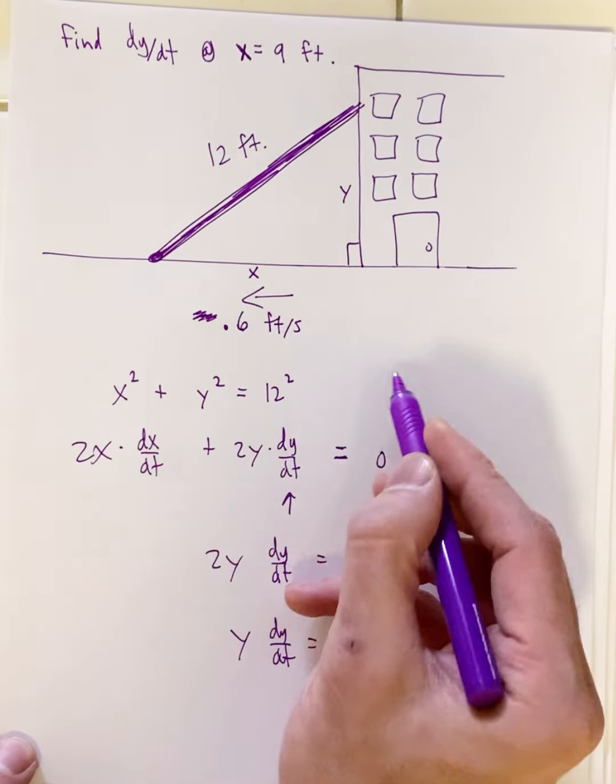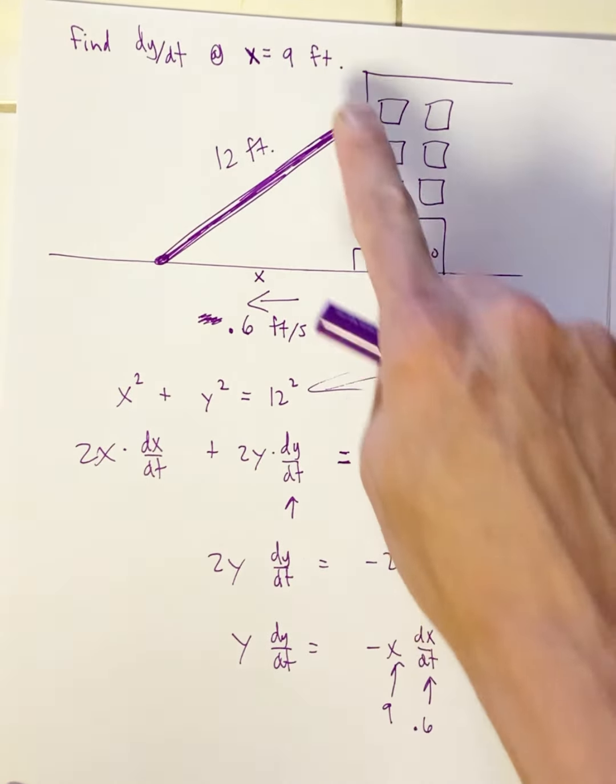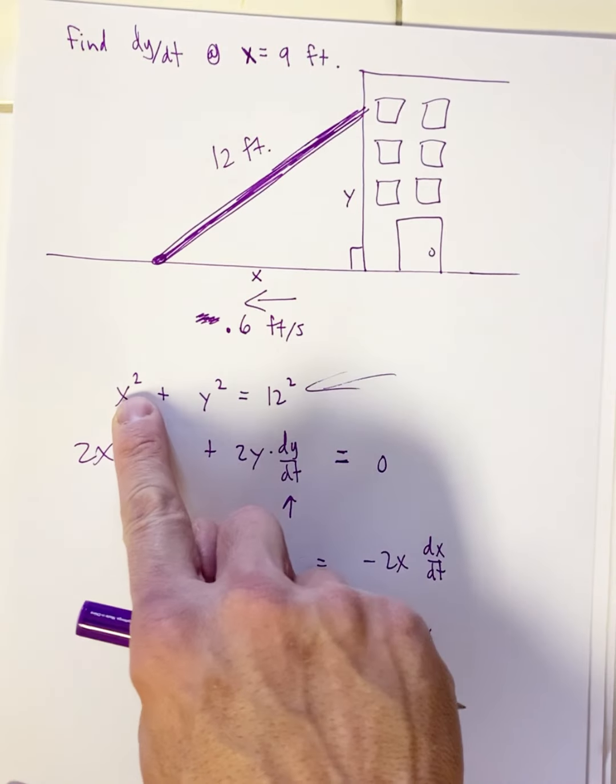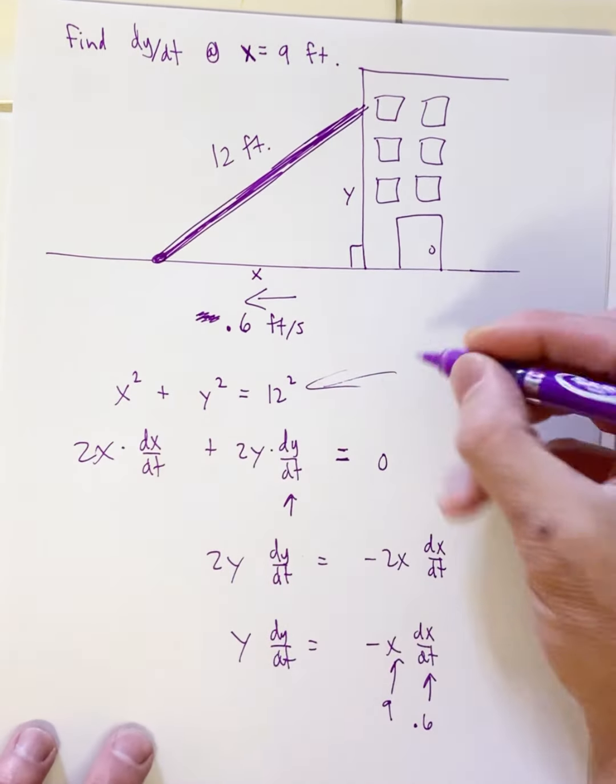So that's when you use your Pythagorean theorem. Go here. Take 9 for x and plug it in there and solve for y. So a quick FYI.